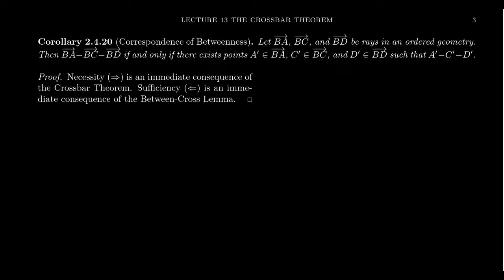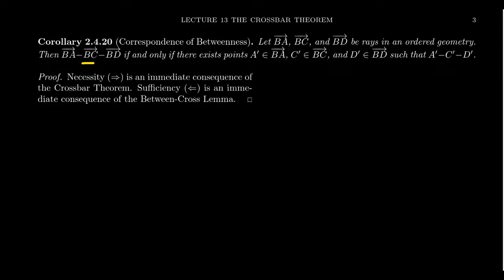We have three rays BA, BC, and BD in an order geometry. Then the ray BC is between BA and BD if and only if there exist points on the rays, call them A', C', and D', so that C' is between A' and D'. So a betweenness statement of rays coincides with a betweenness statement of points.